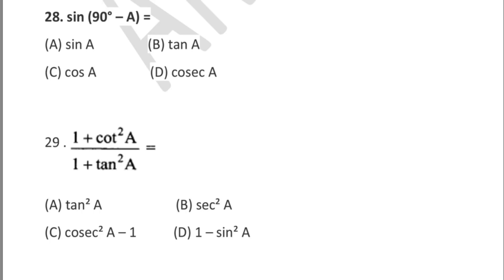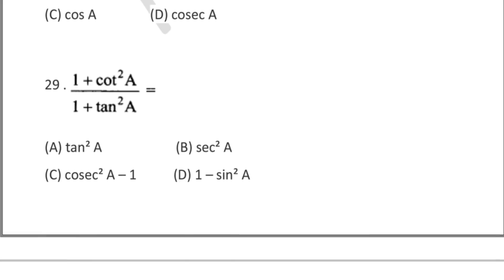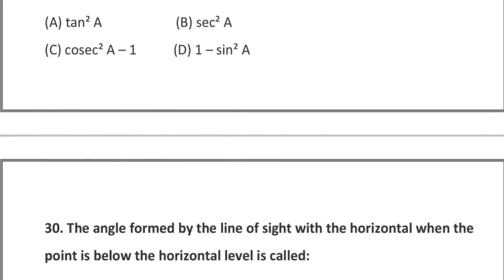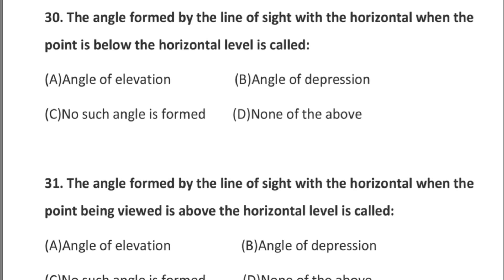Question 29: (1 + cot²A) ÷ (1 + tan²A) is equal to — option A: tan²A, option B: sec²A, option C: cosec²A − 1, option D: 1 − sin²A. Question 30: the angle formed by the line of sight with the horizontal when the point is below the horizontal level is called — option A: angle of elevation, option B: angle of depression, option C: no such angle is formed, option D: none of the above.